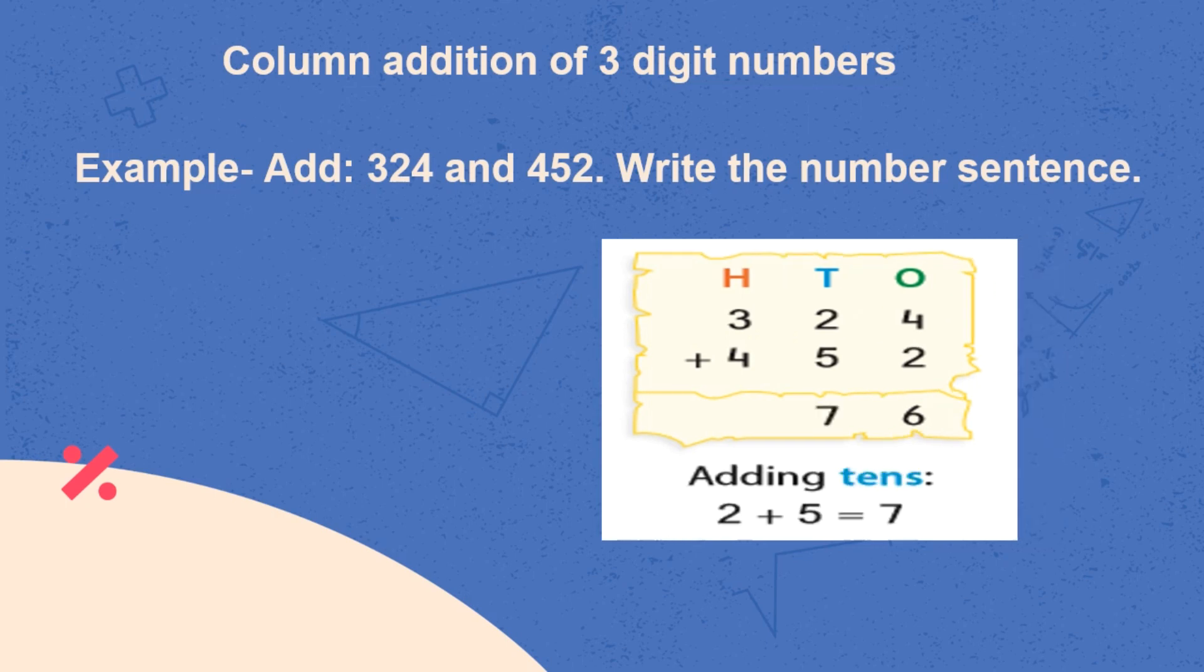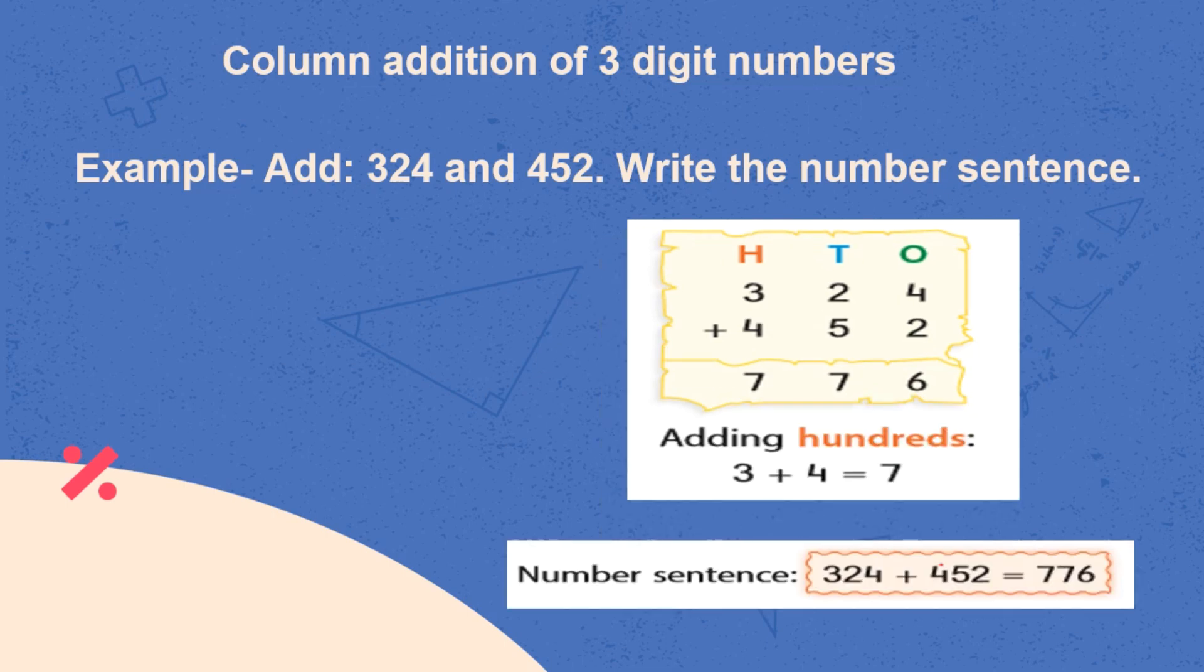At 10's place, adding 2 to 5 will give us 7. At 100's place, adding 3 to 4 will give us 7. So, our resulting sum will be 776.